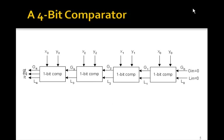Now, we can use four of these and cascade them together in this fashion. So x is x3, x2, x1, x0, a 4-bit x. And we're comparing it with a 4-bit y: y3, y2, y1, y0. Notice that g and l in both start at 0.